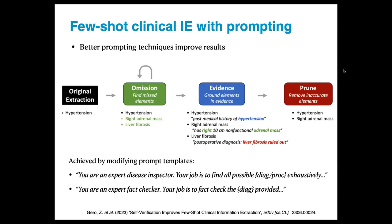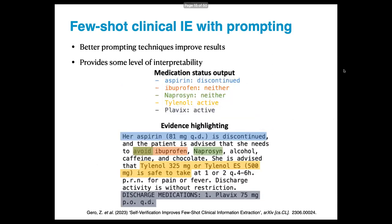A recent work on clinical information extraction called self-verification has the model check for omissions and evidence, then prune the output to make it neater. This is achieved by simply changing the prompt templates — for example, telling it 'you are an expert disease inspector, your job is to...' This setup can improve results and also provide a certain level of interpretability, though that topic is controversial.